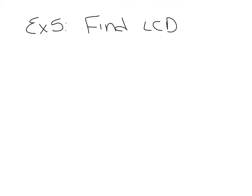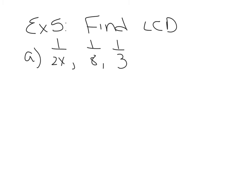So we talked about how to add and subtract when the rational expressions already have the same denominator. What happens if they have different denominators? We're going to have to find the LCD, or least common denominator. Example 5 is on page 151, and part A says just to find the common denominator of these three rationals — we're not going to add or subtract them yet. I'm going to show you a way that works in case it's not intuitive.